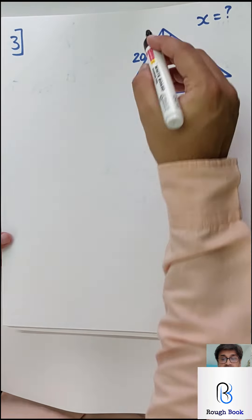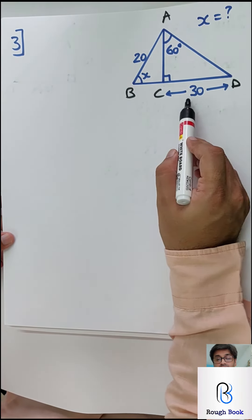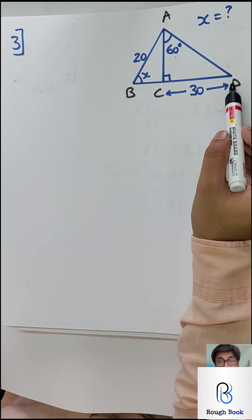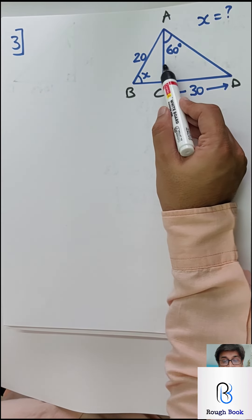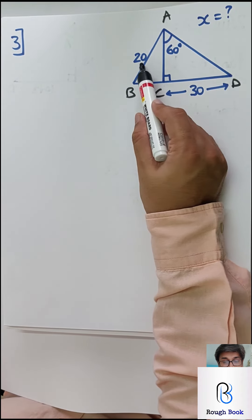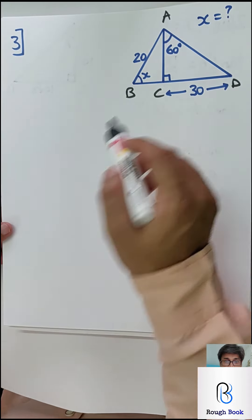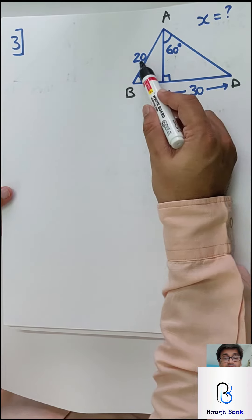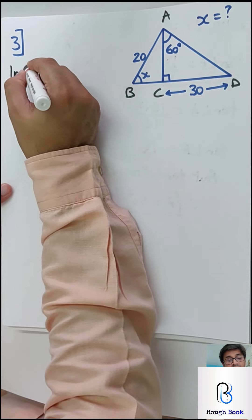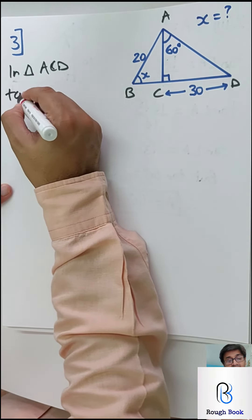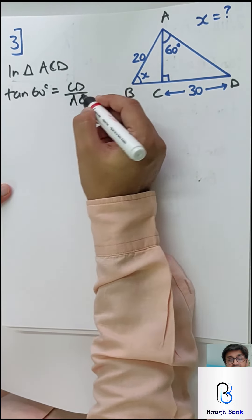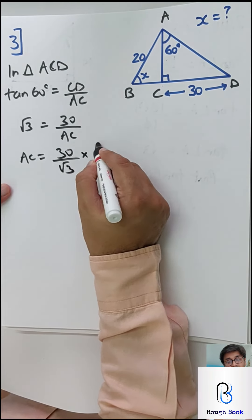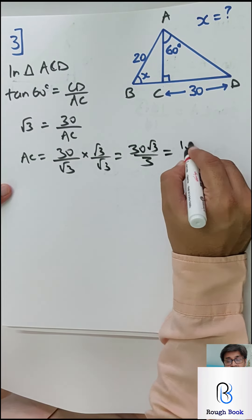Sum number 3 is slightly different but not difficult. Name it ABCD. CD is 30, your target is to find X. Since CD is known, take triangle ACD first. Use tan 60: opposite CD upon adjacent AC. Tan 60 is root 3, CD is 30, so AC becomes 30 upon root 3. Rationalizing: 30 root 3 by 3, which cancels to 10 root 3. Keep it as 10 root 3 — always convert to decimals only at the final step.